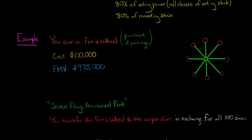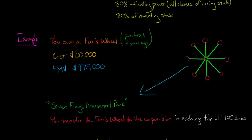You're going to create a corporation called Seven Flags Amusement Park and transfer the Ferris wheel to the corporation in exchange for all 100 shares. You own 100% of the company, so you meet the control test of Section 351 — you're transferring property, a Ferris wheel, in exchange solely for stock, and you have more than 80% control immediately afterwards. So this is a Section 351 transaction.